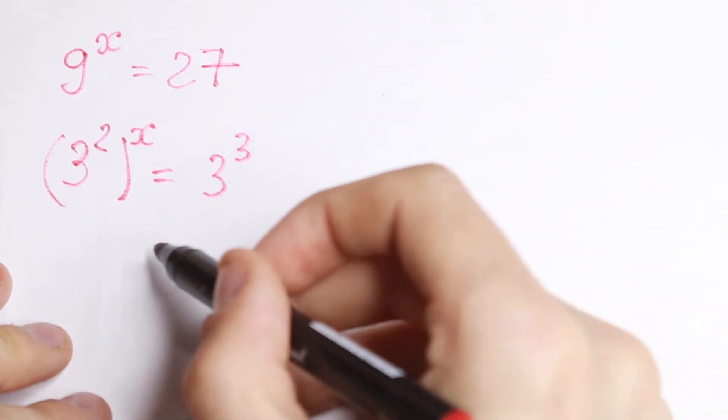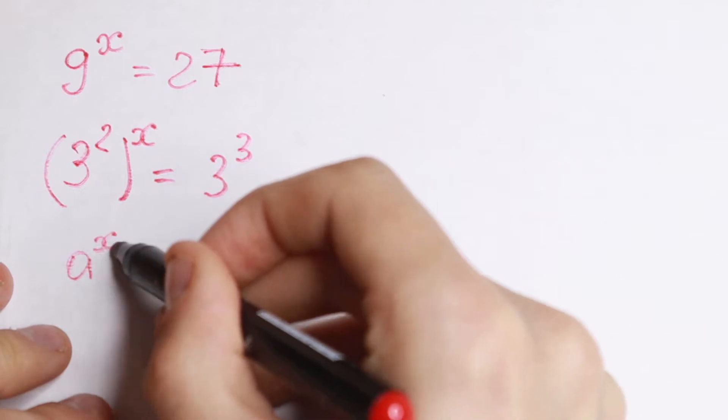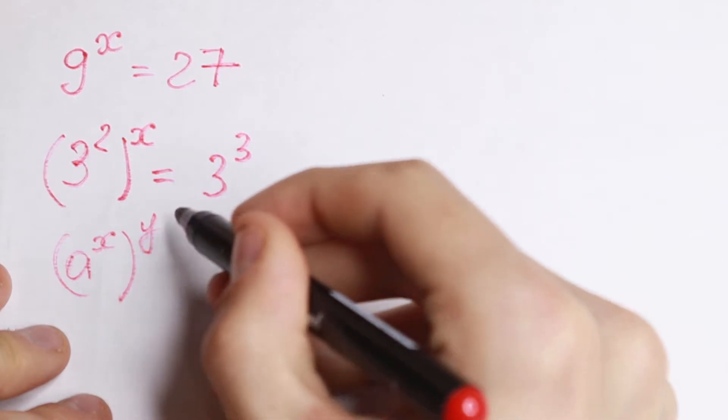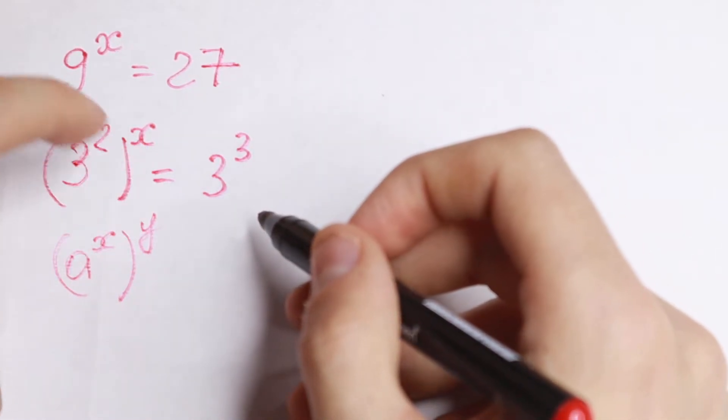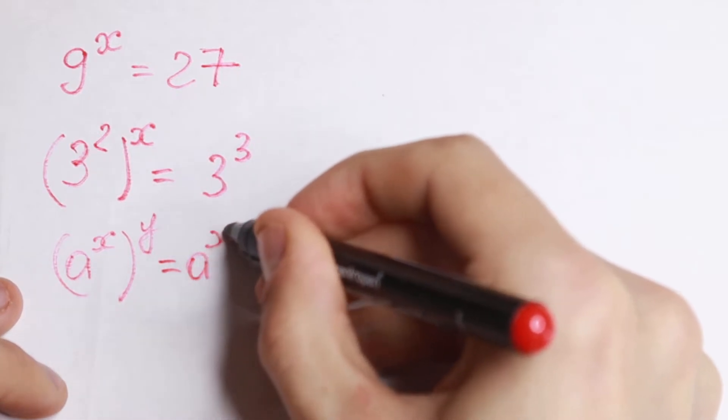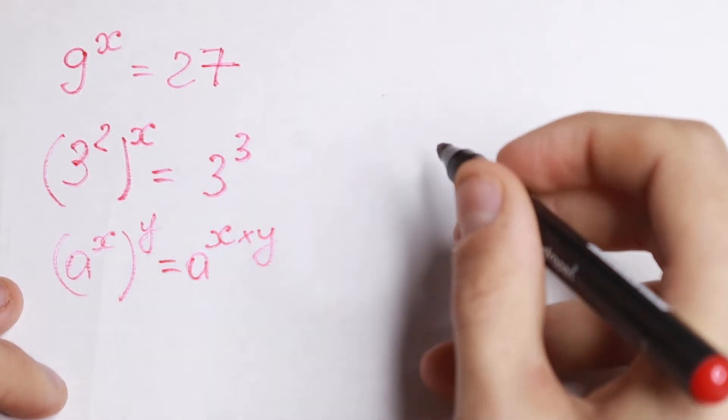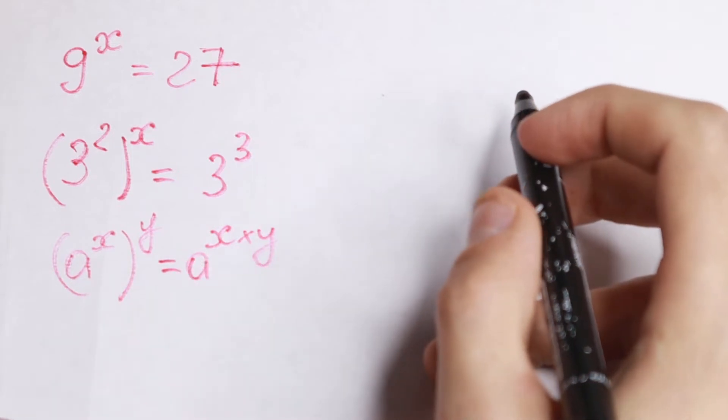And moreover, we need to know the rule. If we have a to the power x raised to the power y, we can write it as a to the power x times y. So we just multiply our power.